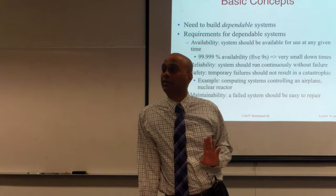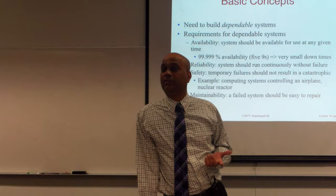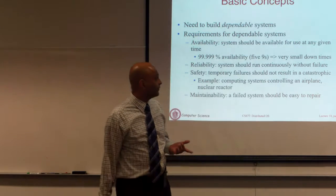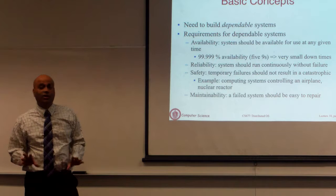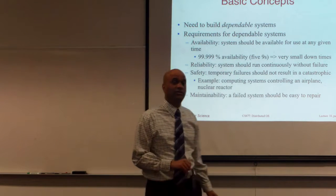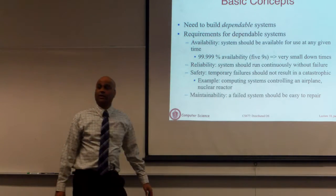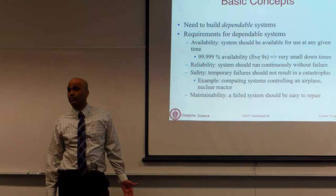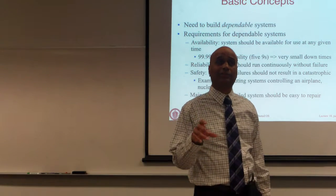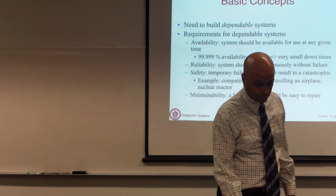For systems like self-driving cars, airplane computers, or nuclear reactors, you do not want system failures to cause catastrophic problems. Maintainability is another property — once a system fails it should be easy to repair. You have to design your system to understand what part failed, replace or fix those components. These are the basic concepts of dependability.